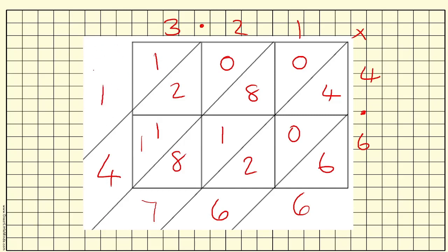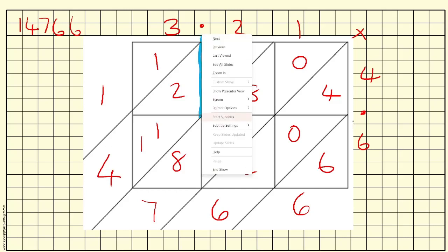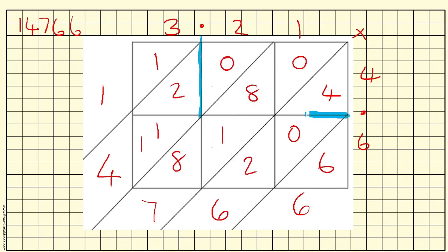So this time my number is going to start at the top column here, which is 14,766. That's my answer. All I need to do now is pop in where the decimal point is going to go. So again, starting up here with this decimal, we're going to bring it down. Starting on the left-hand side, we're going to bring that across until they meet. And then we're going to come diagonally into my answer. So it points exactly where my decimal point is going to go, which is 14.766.